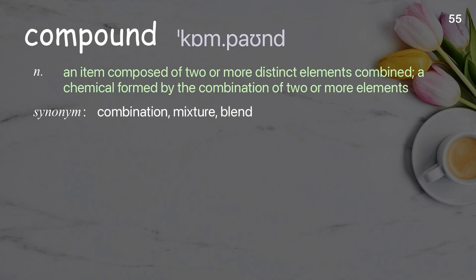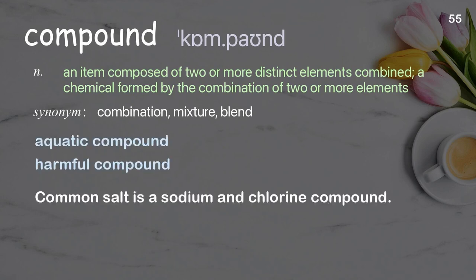Compound. An item composed of two or more distinct elements combined; a chemical formed by the combination of two or more elements. Examples: Aquatic compound, harmful compound. Common salt is a sodium and chlorine compound.